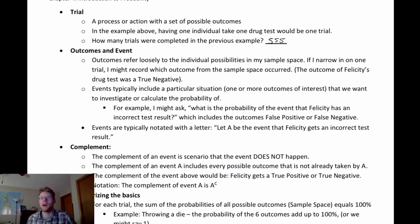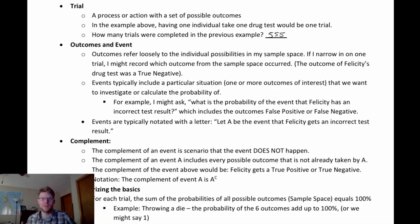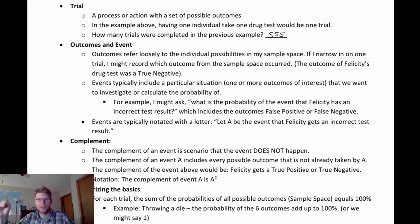We often denote an event with a capital letter — that's common notation. So a lot of times we'll say something like, let A be the event that a person gets an incorrect test result. That's a very common way to define an event, and then we can use A instead of writing out the full description every time.